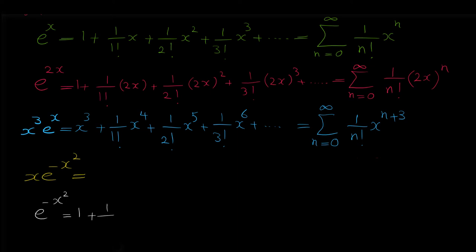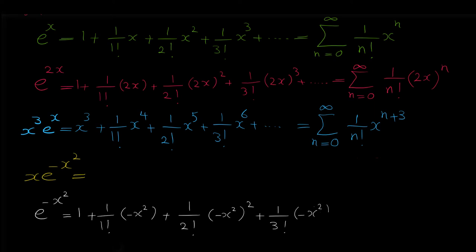So for finding the Maclaurin series of e to the negative x squared, we replace every x with negative x squared: 1 plus 1 over 1 factorial times (negative x squared), plus 1 over 2 factorial times (negative x squared) squared, plus 1 over 3 factorial times (negative x squared) to the 3, and so on. In sigma form this is: sigma from n equals 0 to infinity of 1 over n factorial times (negative x squared) to the power of n.